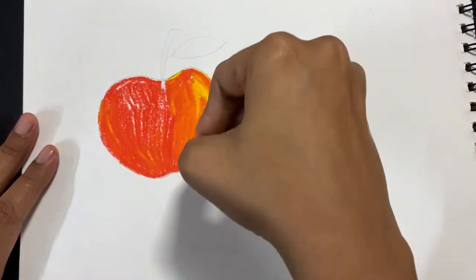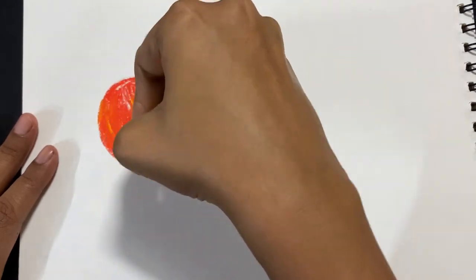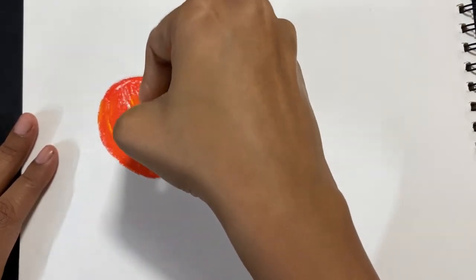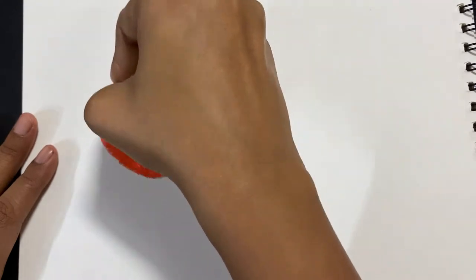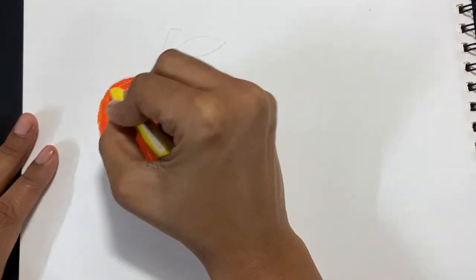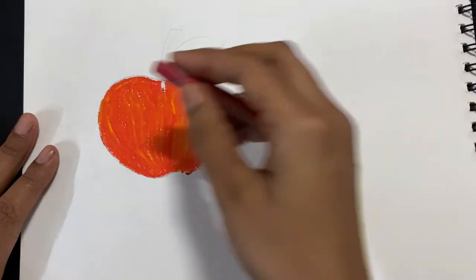This particular one I'm using is called Tiki, and this one requires me to put less pressure, so that's the fun part about it. My hand is hiding the coloring right now, but now you can see it when I lift it.